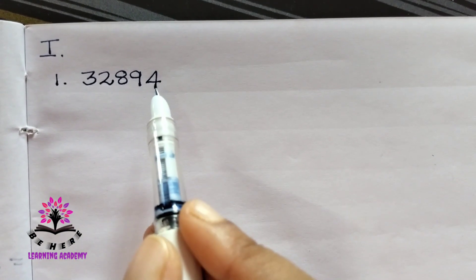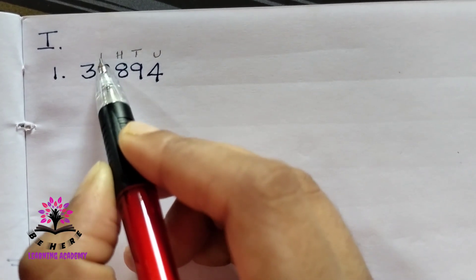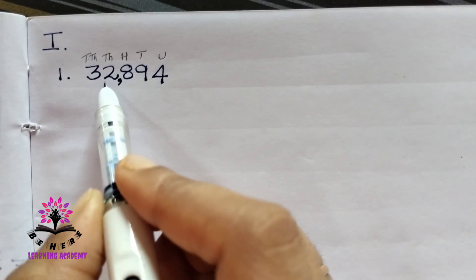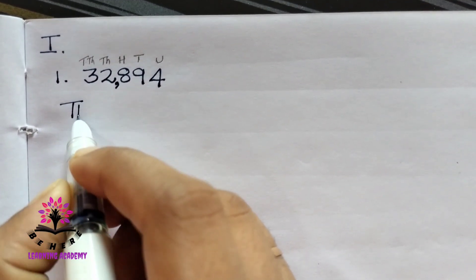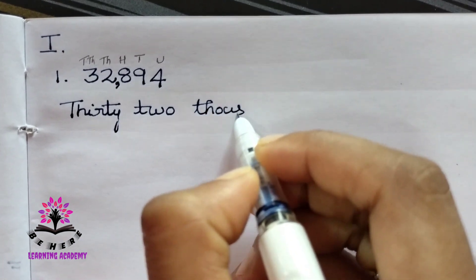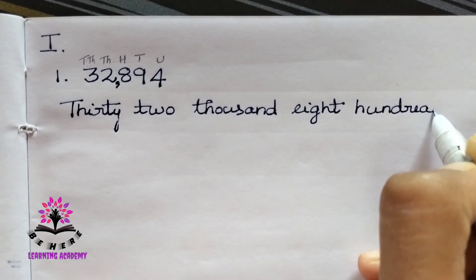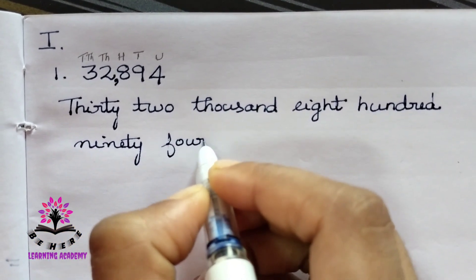First, we have to put the comma in the appropriate place. To put the comma we mark the places: unit, ten, hundred, thousand, ten thousand. The comma comes after hundred. So 32,894 — we can read this as thirty-two thousand eight hundred and ninety-four.